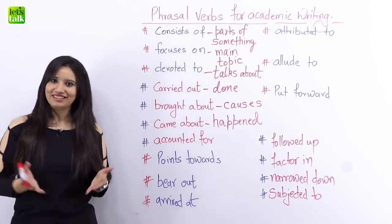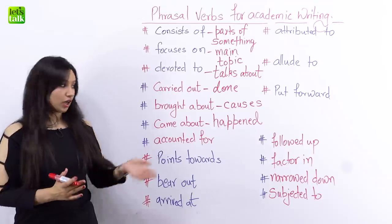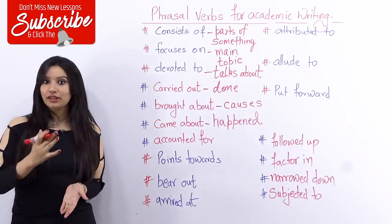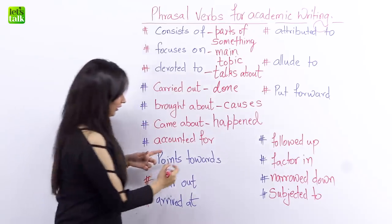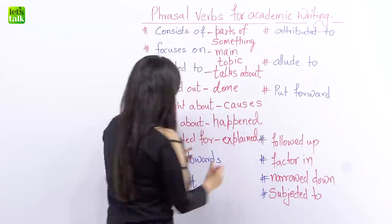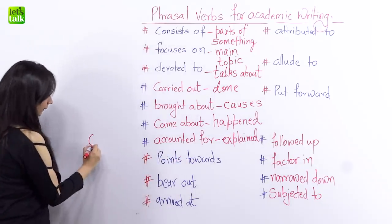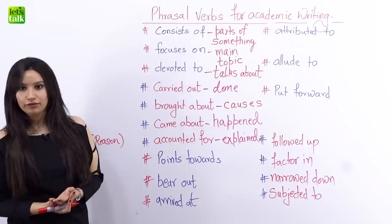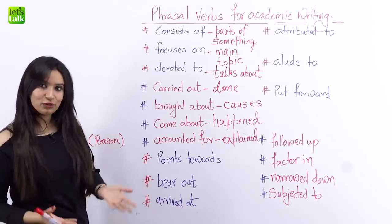Now if you look at the next one, it is 'accounted for.' So let me say a sentence and you try to find out the meaning. The unusually cold weather accounted for increasing fuel usage — which means that the unusually cold weather explained the increasing usage of fuel. So 'accounted for' means explained, which is actually talking about a reason. Whenever you're talking about a reason, you write 'accounted for.' The reason was unusually cold weather, and it accounted for the increasing fuel usage.